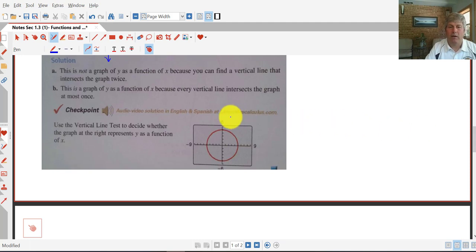And in our checkpoint here, sure enough, here we have it again, where we hit that graph two different times with a vertical line. So that is not a function because it fails the vertical line test.